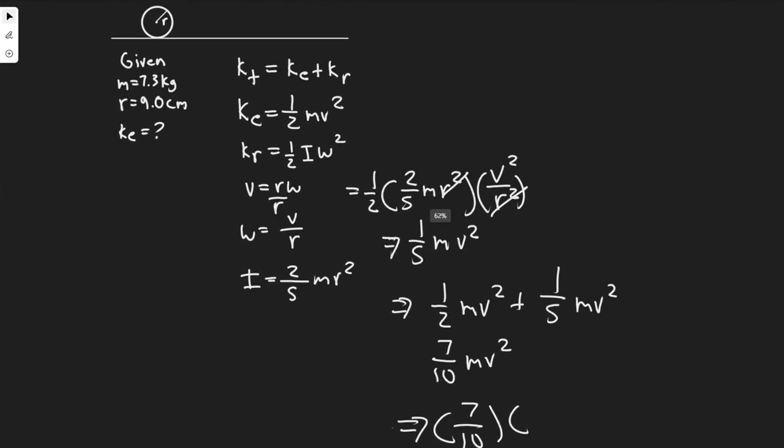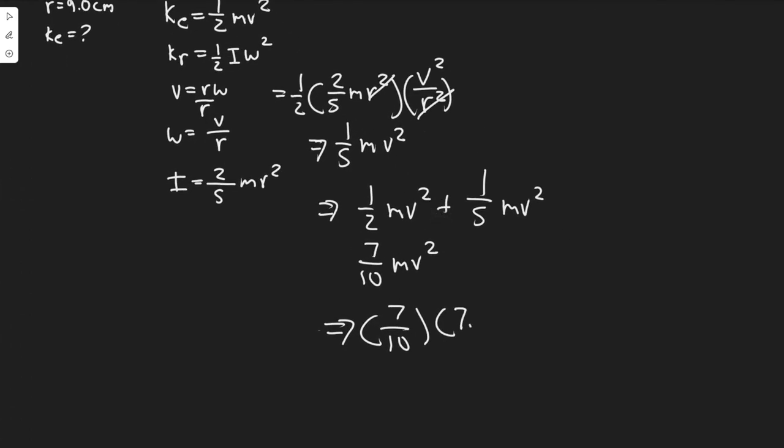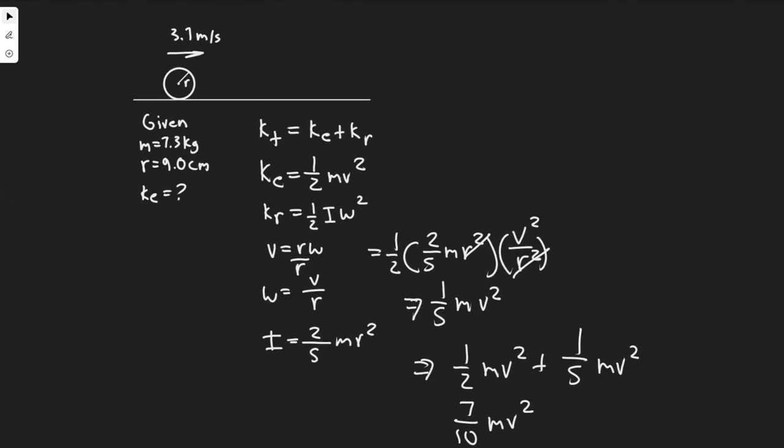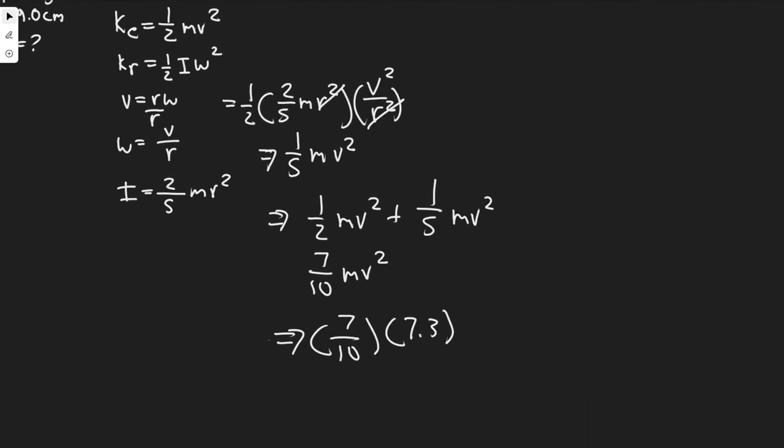It's just 7 over 10 multiplied by the mass, which is 7.3 kilograms, and then multiply this by our velocity value 3.7. Make sure you square that. Don't forget that. So plugging this in, we have 7 over 10 times 7.3 multiplied by 3.7 squared.